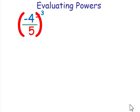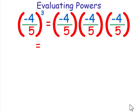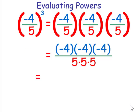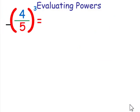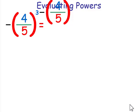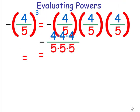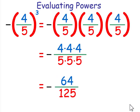Even if it has a negative, it works the same way — we're going to write it as a factor 3 times. We'll multiply the numerators, multiply the denominators, and the result will be negative 64 over 125. But if the negative is outside, not in the parentheses, we never repeat the negative. It stays outside until you have it completely simplified.